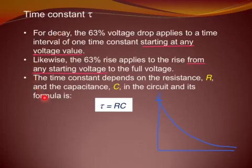Some important points about time constant tau. For decay, the 63% voltage drop applies to a time interval of one time constant tau, starting at any voltage value. So if we look at the sketch here, the 63% drop doesn't have to start from the full voltage. It could start anywhere, let's say from here.